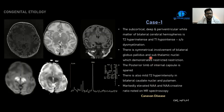Under congenital etiology, a case of Canavan's disease shows subcortical, deep, and periventricular white matter of bilateral cerebral hemispheres with T2 hyperintensity and T1 hypointensity, suggesting dysmyelination. There is symmetrical involvement of bilateral globus pallidus and subthalamic nuclei demonstrating restricted diffusion, with characteristic sparing of the posterior limb of the internal capsule. Mild T2 hyperintensity in the bilateral caudate nuclei and putamen is also noted.